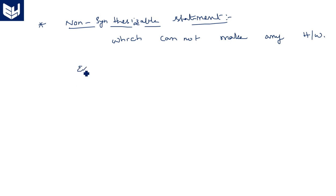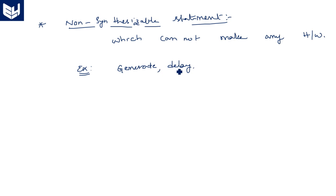Examples of non-synthesizable statements include: generate, delay, and real. All such statements will not create any hardware architecture. So these are the different topics covered — procedures, functions, and synthesizable and non-synthesizable statements in VHDL. Thank you.